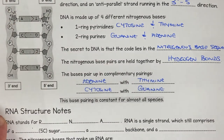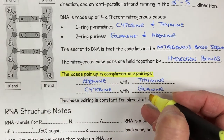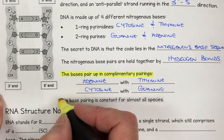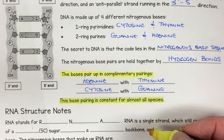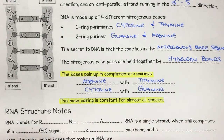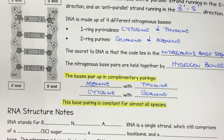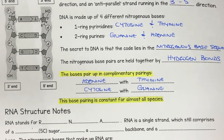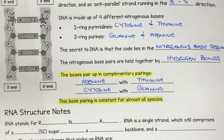This complementary base pairing happens in every single living thing, whether that be an ant, an octopus, a human, a plant, a rabbit — anything that is living has the same base pairs. Basically, DNA is the same for every living thing. So we have the same DNA as an ant.